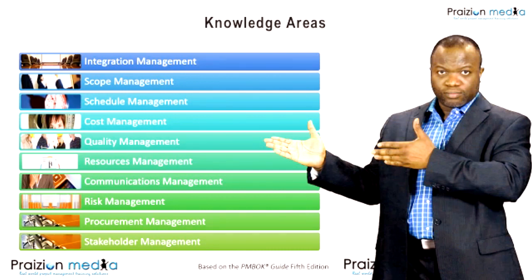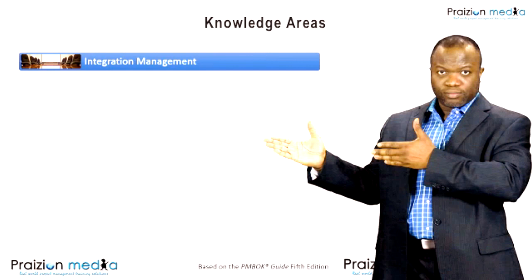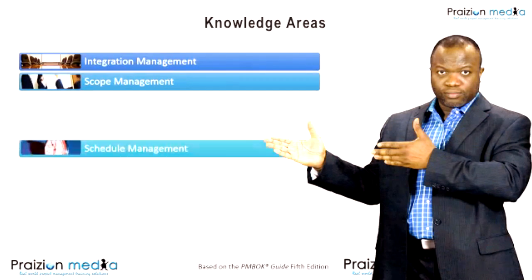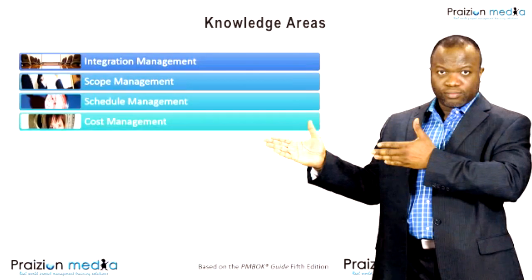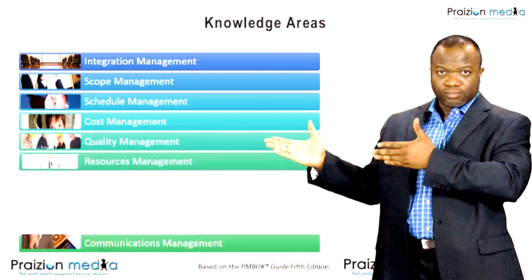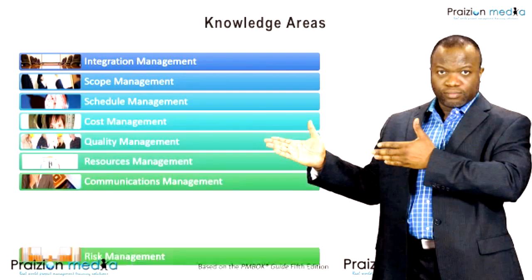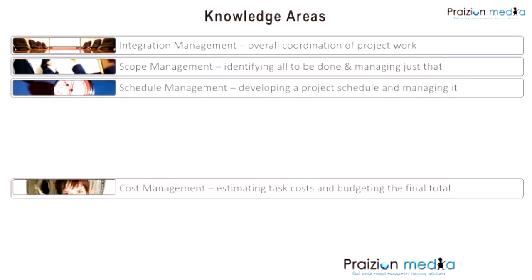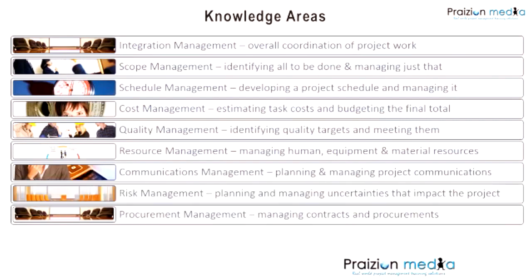So if you slice them by knowledge area, you have this, and I'll give you a mnemonic for this. The mnemonic is: I saw six Cubans, quietly rolling cigars, really puffing smoke. That's the mnemonic — I saw six Cubans, quietly rolling cigars, really puffing smoke.